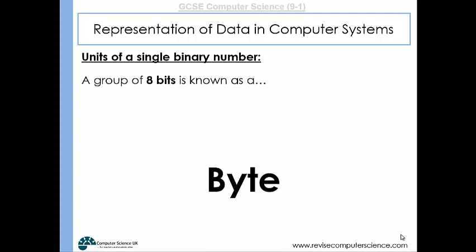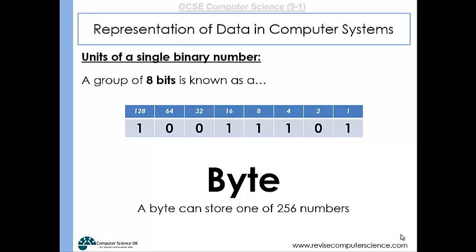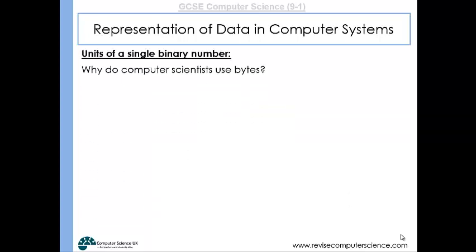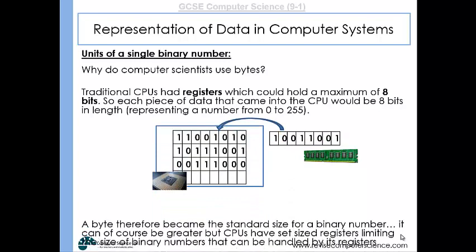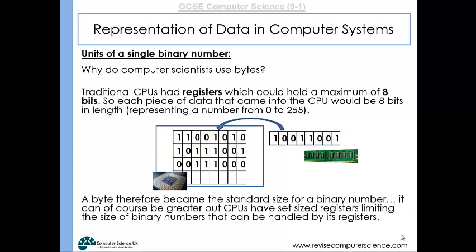A group of eight bits is known as a byte, and it can store one of 256 different numbers. Why do we use bytes in computer science? Well, traditionally CPUs had registers that could hold eight bits. So each piece of data that came into the CPU would be eight bits in length. A byte therefore became a standard size for a binary number. But nowadays we have CPUs that are 16-bit or 32-bit with much larger register sizes. But a byte still is a standard unit.